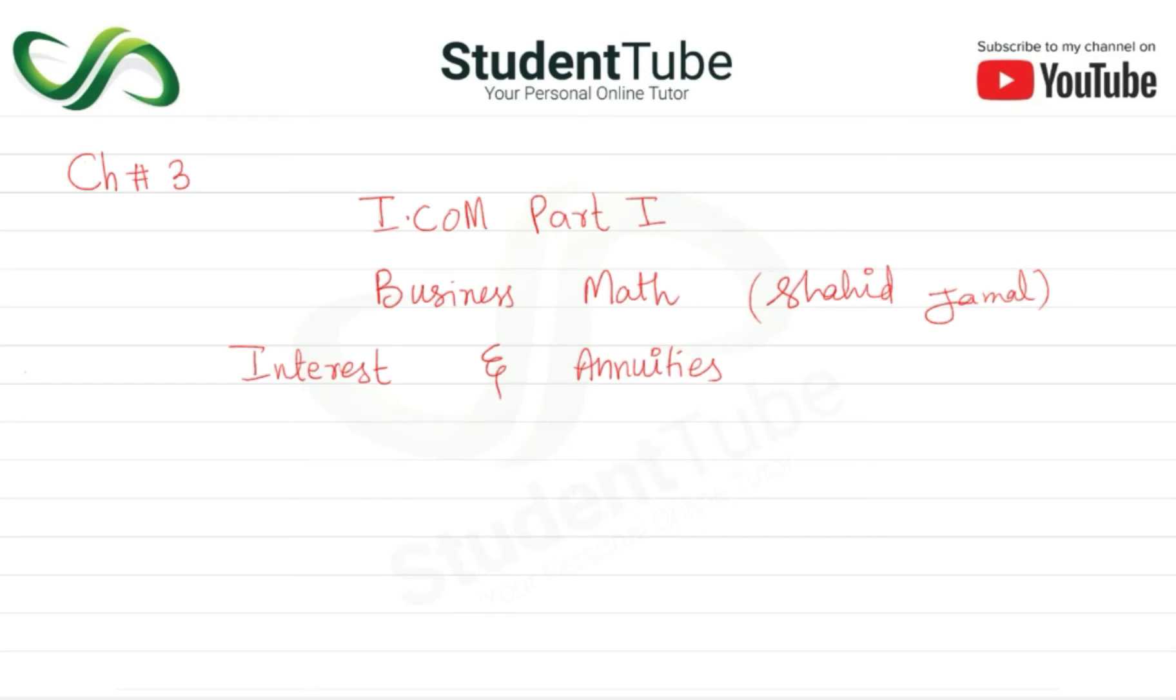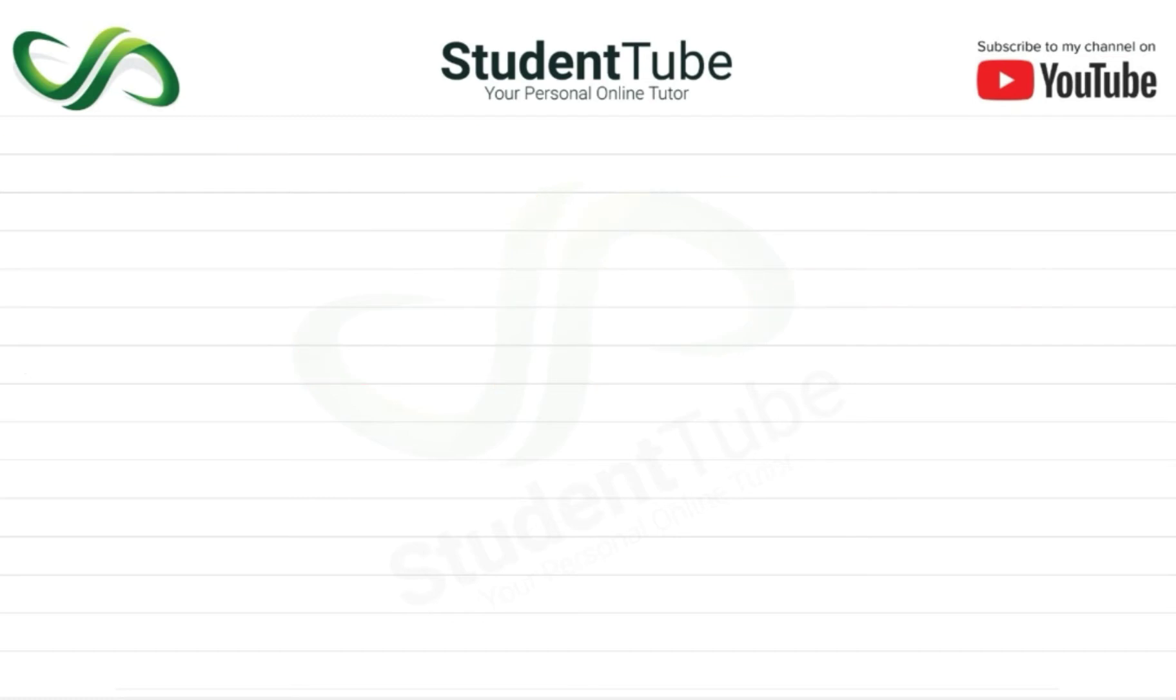Assalamualaikum, welcome to Student Tube. Today's lecture, Chapter 3, I.com Part 1, Business Math book of Shahid Jamal. The chapter is Interest and Annuities. Here we have effective interest, so we have a formula here. Question is 3.479% per annum compounded quarterly.